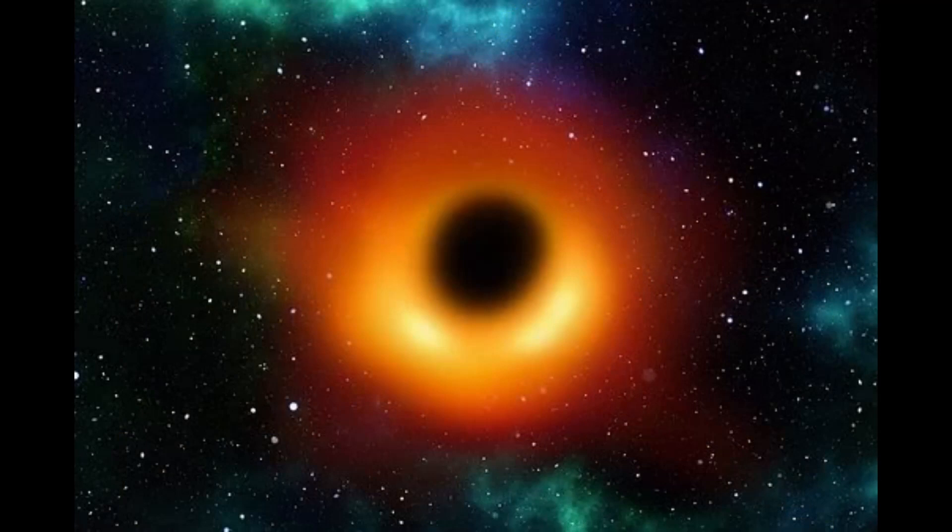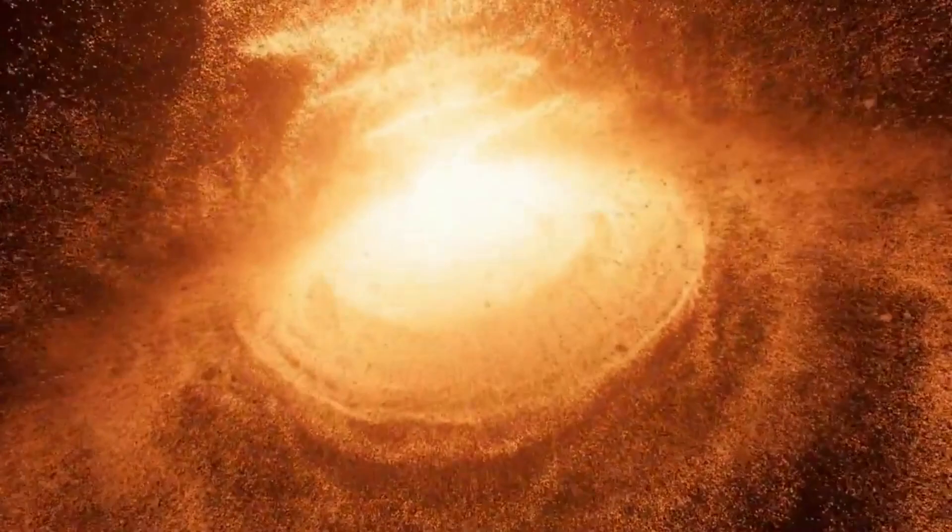Just last year, astronomers published the first-ever picture of a black hole and its event horizon, a 7 billion solar mass beast at the center of the M87 elliptical galaxy. It's over a thousand times bigger than the black hole in our galaxy, whose discoverers snagged this year's Nobel Prize.